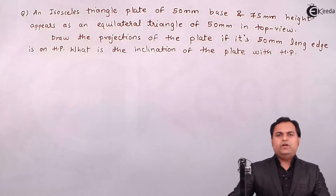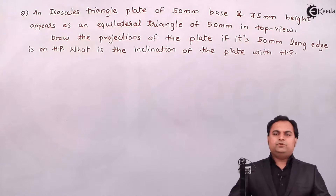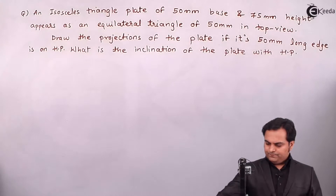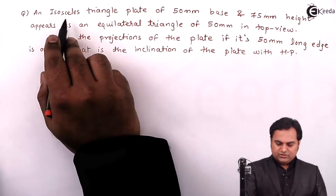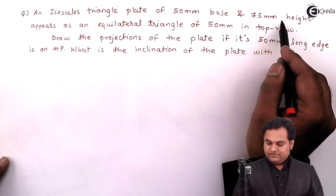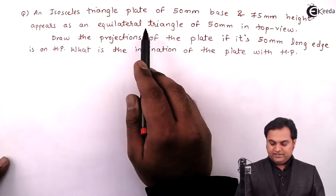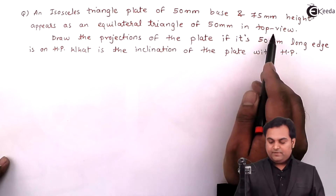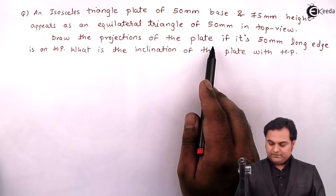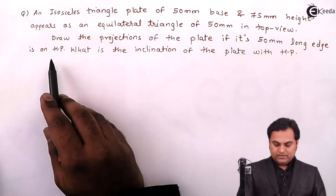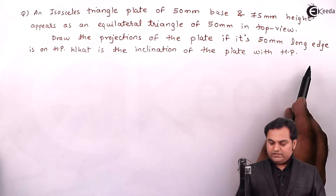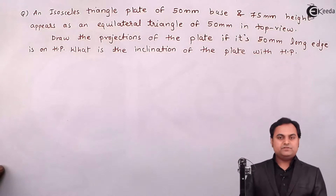Hello friends, in this video we are going to see a problem on projection of planes. The question is: an isosceles triangle plate of 50 mm base and 75 mm height appears as an equilateral triangle of 50 mm in top view. Draw the projections of the plate if its 50 mm long edge is on HP. What is the inclination of the plate with HP?